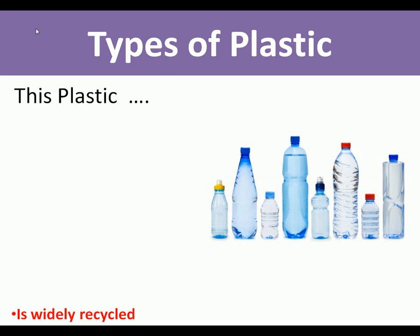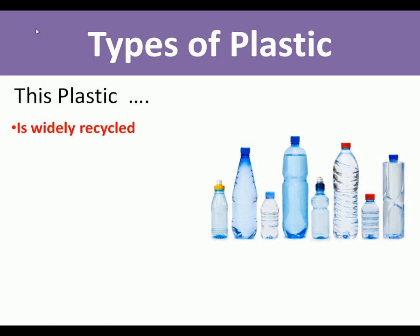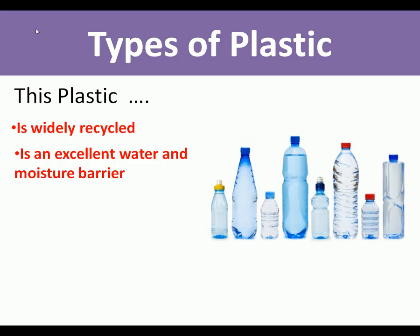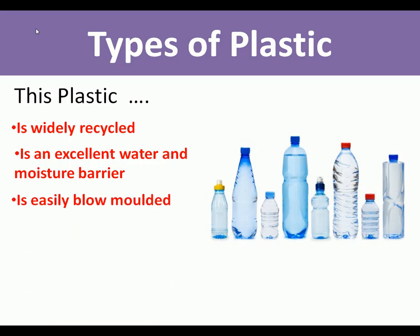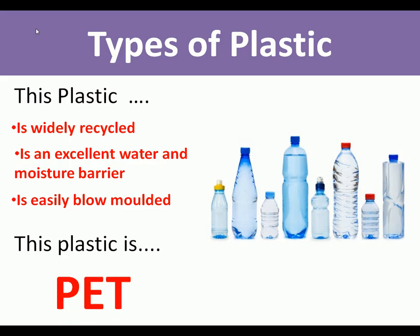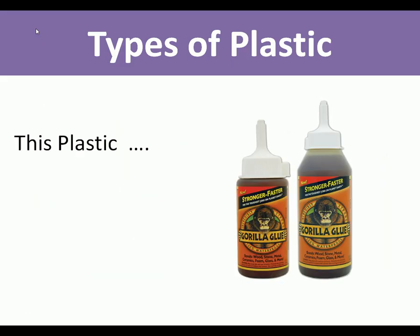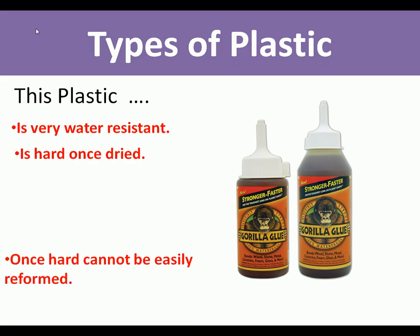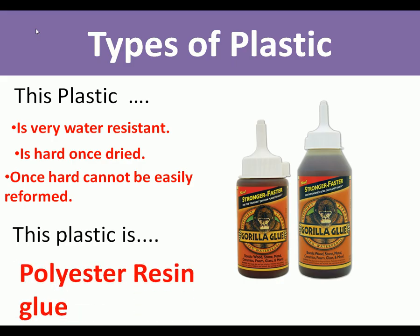This plastic is widely recycled, is an excellent moisture and water barrier, and is easily blow moulded into bottles — this plastic is PET. This plastic is very water resistant, is hard once dried, and once hard cannot easily be reformed — this plastic is polyester resin glue.